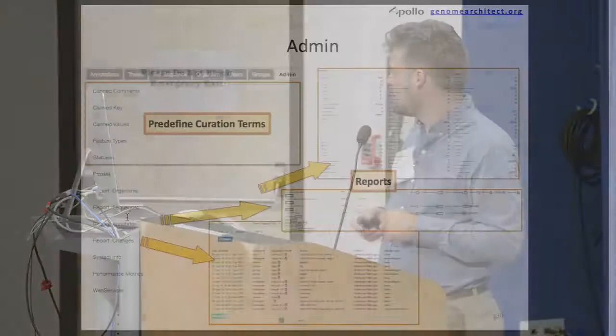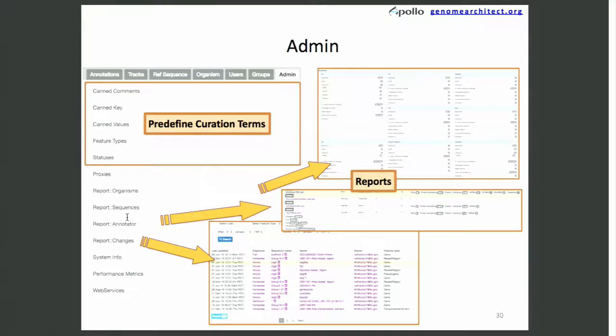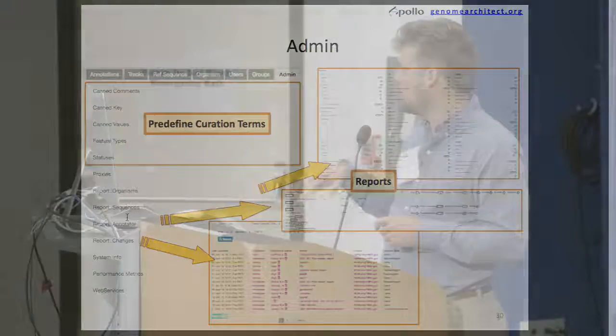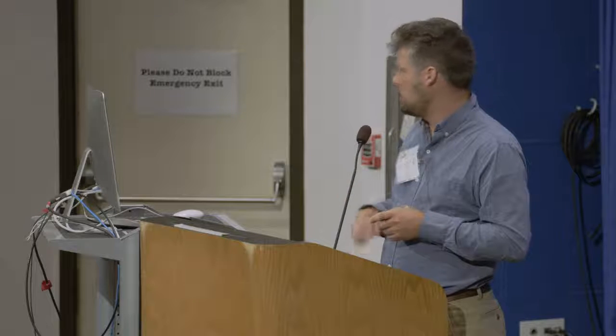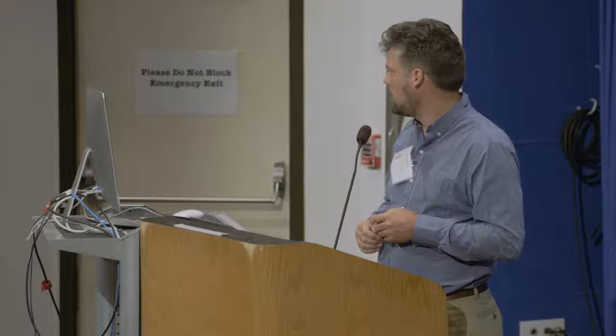We have an administration screen as well, which allows reports — the types of reports you would think — as well as this predefined curation term section. This is important because if you have lots of curators curating lots of things, they'll come up with different ways of saying the same things. Having this set of predefined canned comments or keys is important just to standardize how researchers are describing these annotations.